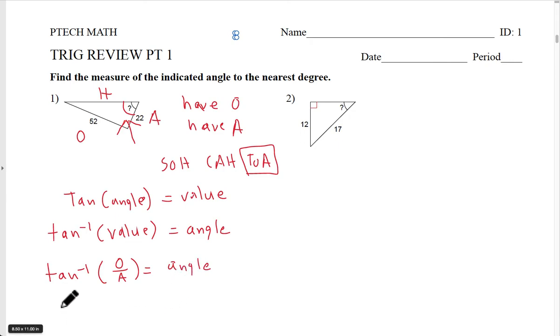So let's just do that and let's get the value. Tan to the negative one of opposite over adjacent. My opposite is 52, my adjacent is 22. So second function, tangent of 52 divided by 22, close parentheses, enter, and that's going to give me 67.06.